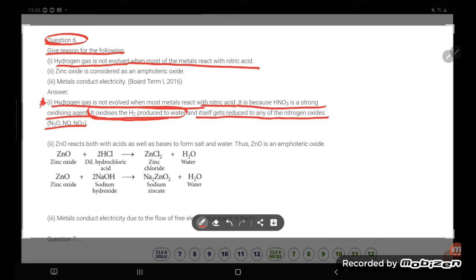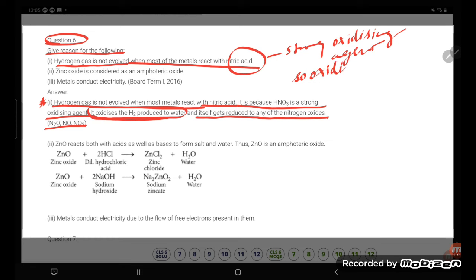Nitric acid is a strong oxidizing agent. That is what the answer. So if it is a strong oxidizing agent, what does it oxidize? It oxidizes H2 to H2O, okay? So H2 does not liberate.